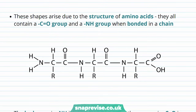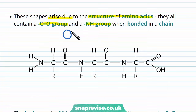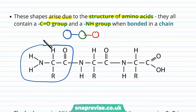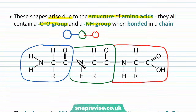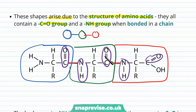Why do these shapes form? They arise due to the structure of the amino acids which make up the polypeptide. Every amino acid contains a CO group and an NH group, even when bonded to other amino acids. Looking at a chain — say blue, green, then red — each has a peptide bond linking them. Every single one has a CO group pointing up and an NH group. These are important in forming either the alpha helix or the beta pleated sheet shapes.